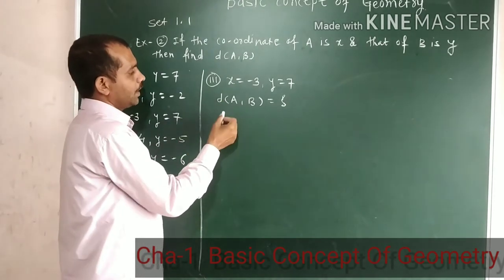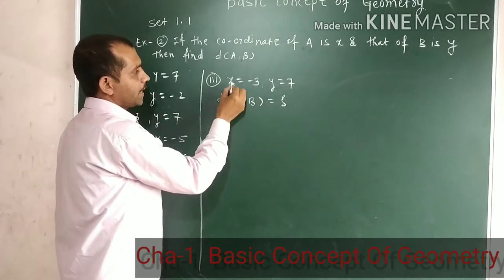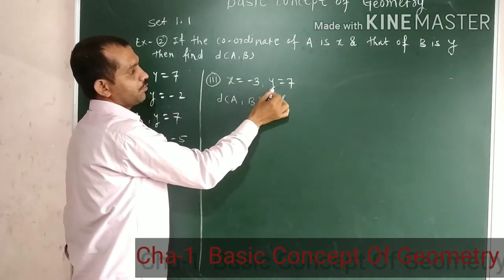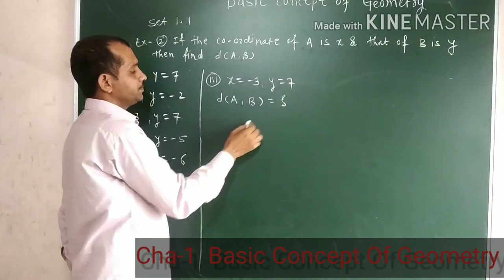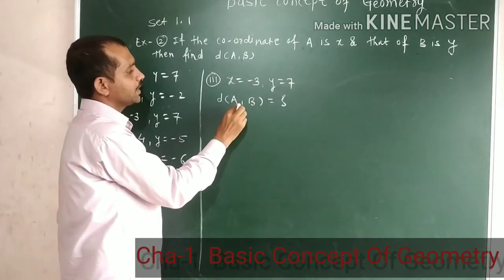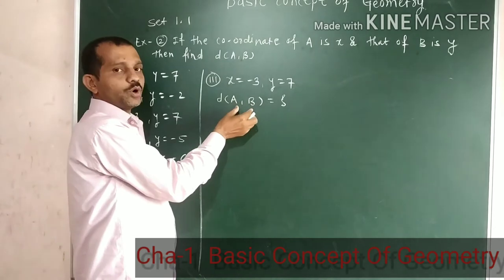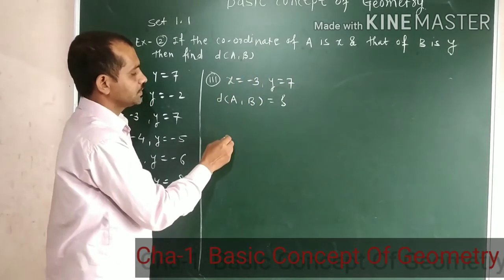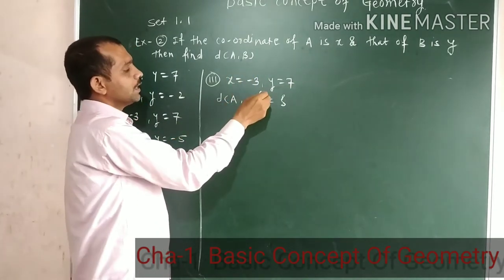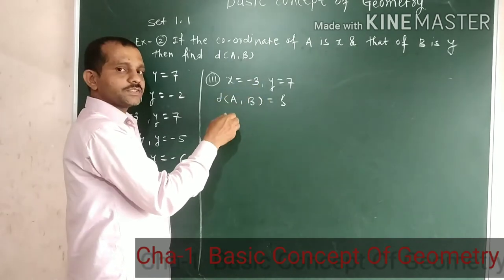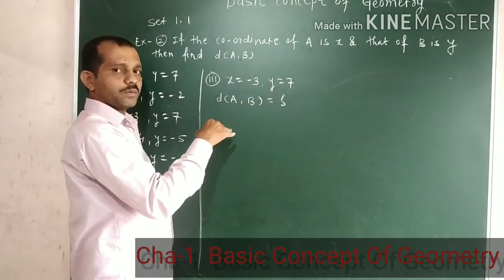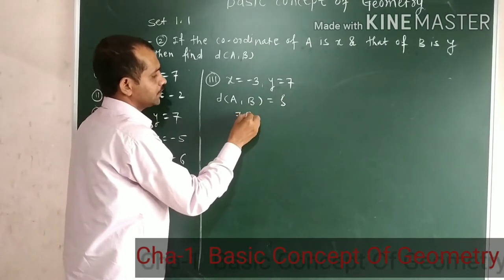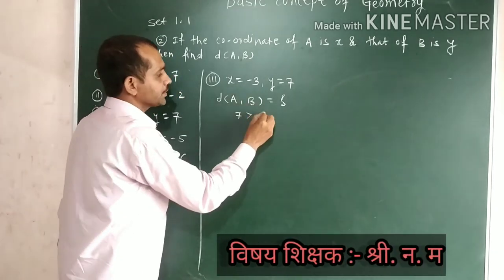This is d of AB. Find d of AB: A coordinate is x with value minus 3, B coordinate is y with value 7. To find the distance between the two points, notice that 7 is the greater number than minus 3.